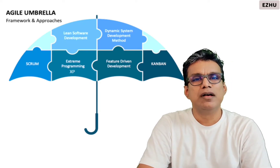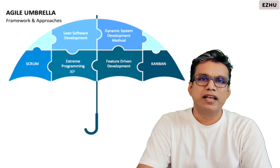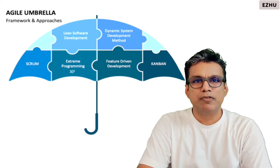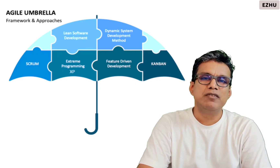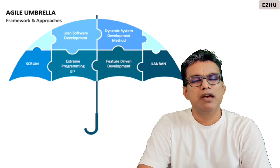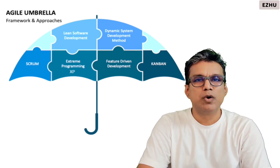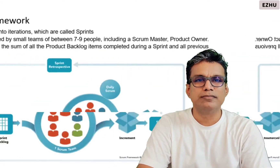This includes Scrum, Kanban, Extreme Programming, Adaptive Software Development, Dynamic Software Development, Feature Driven Development, and Behavior Driven Development. We will go through all these frameworks in detail now.